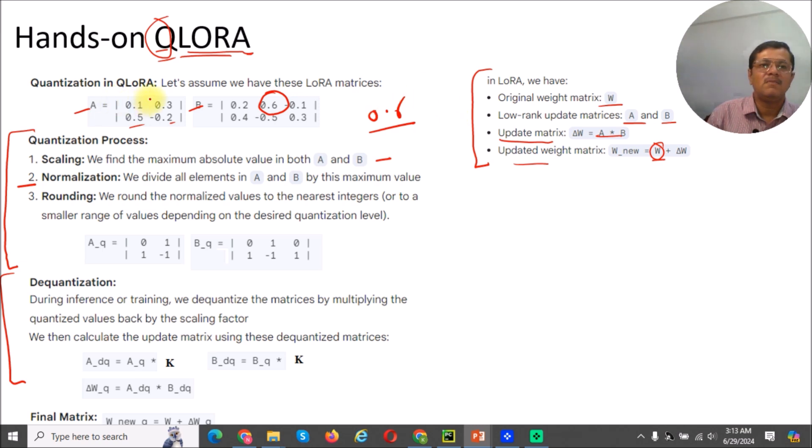Now the second part is normalization. So we will divide all values by 0.6, and after that, rounding. So my limits are like if it is near to 1, then we will consider it 1. For example, if we divide 0.3 by 0.6, it will be less than 0.5, so it will be 0. If we consider 0.5 or greater, then we can consider it 1.